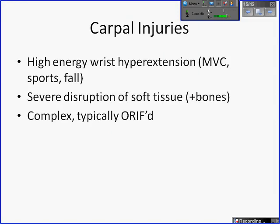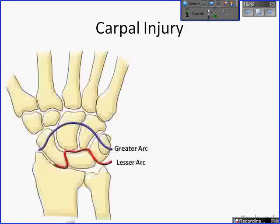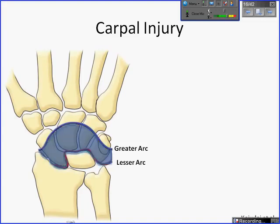Carpal injuries occur in predictable patterns. There are two main patterns: the lesser arc and greater arc patterns. The lesser arc is almost a pure ligamentous injury about the lunate. The greater arc injury involves a perilunate dislocation plus a fracture through any of the bones surrounding the lunate. The vulnerable zone is defined as the zone between those two arcs, and that's where most injuries of the wrist occur.